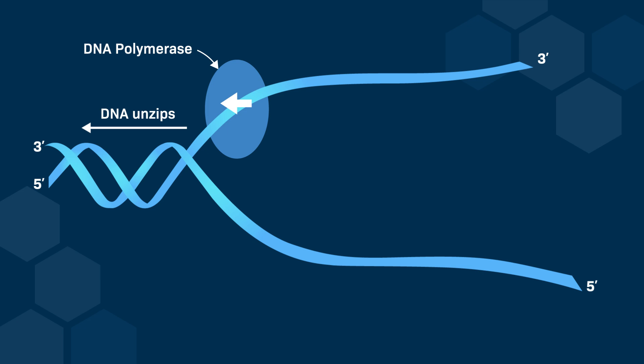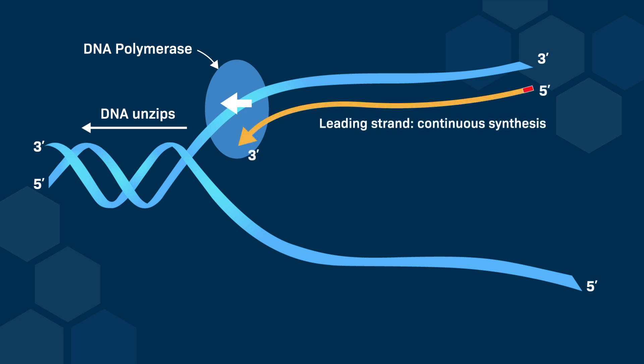At the replication fork, the two template strands are anti-parallel, which means that one strand is oriented 5' to 3' and the other is 3' to 5'. This creates a challenge as DNA polymerase can only synthesize continuously along the 3' to 5' template strand, which becomes the leading strand.